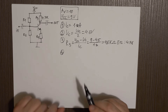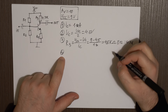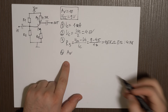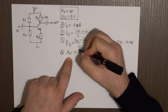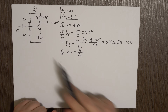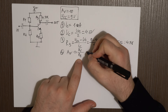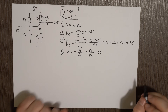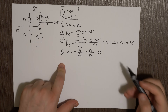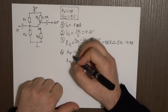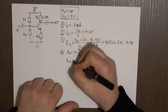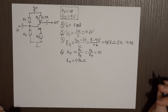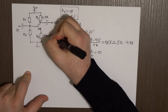Step number 4 is calculating R4, based on the voltage gain formula for this circuit. The voltage gain is approximately RC divided by RE — the collector resistor divided by the emitter resistor. In our case, that is R3 divided by R4 and it equals 10. Since we already know the gain and R3, R4 is 10 times smaller than R3, giving us R4 = 470 Ω.